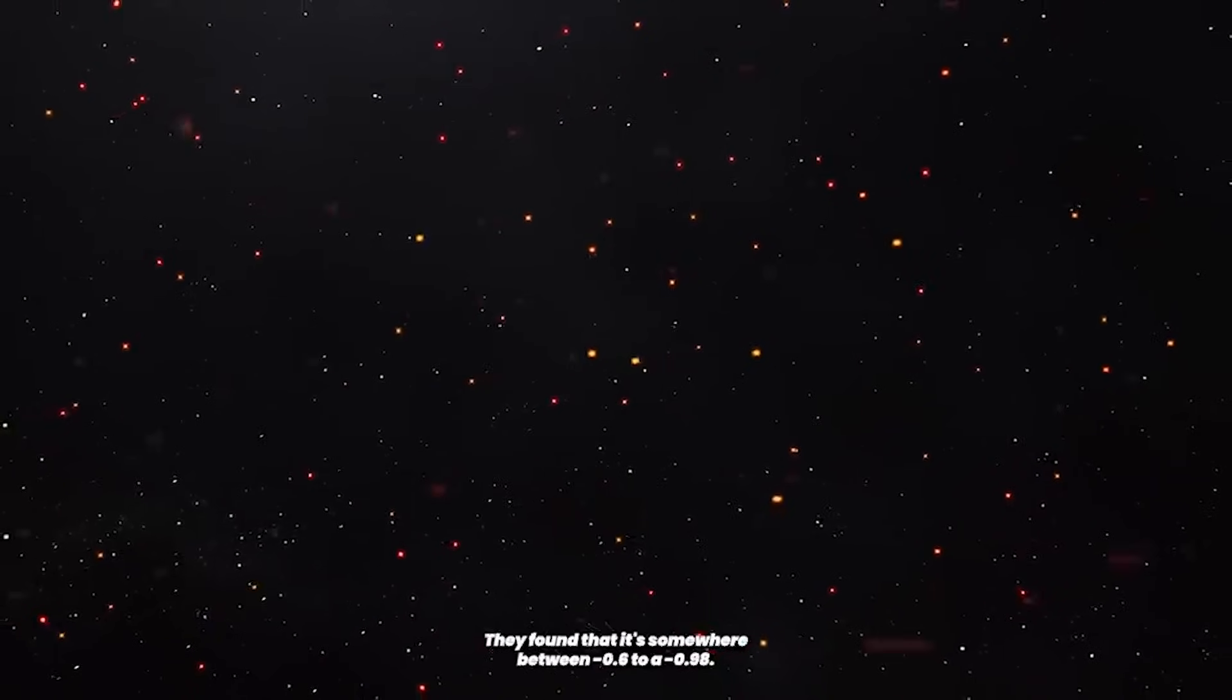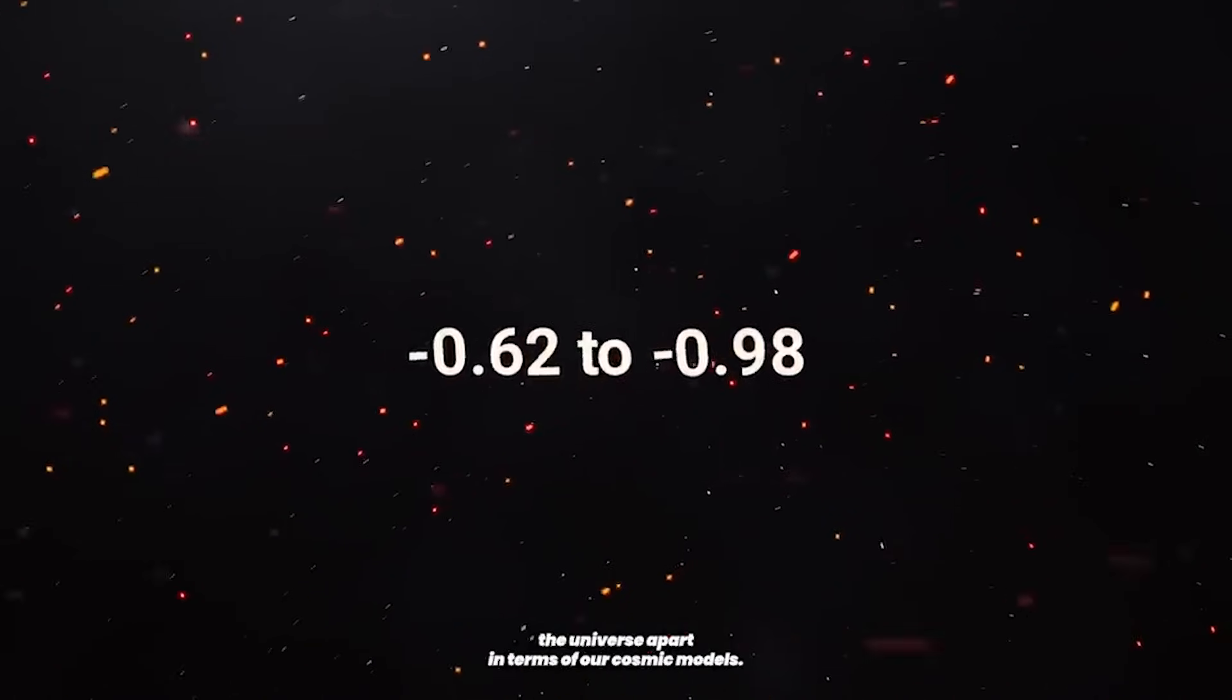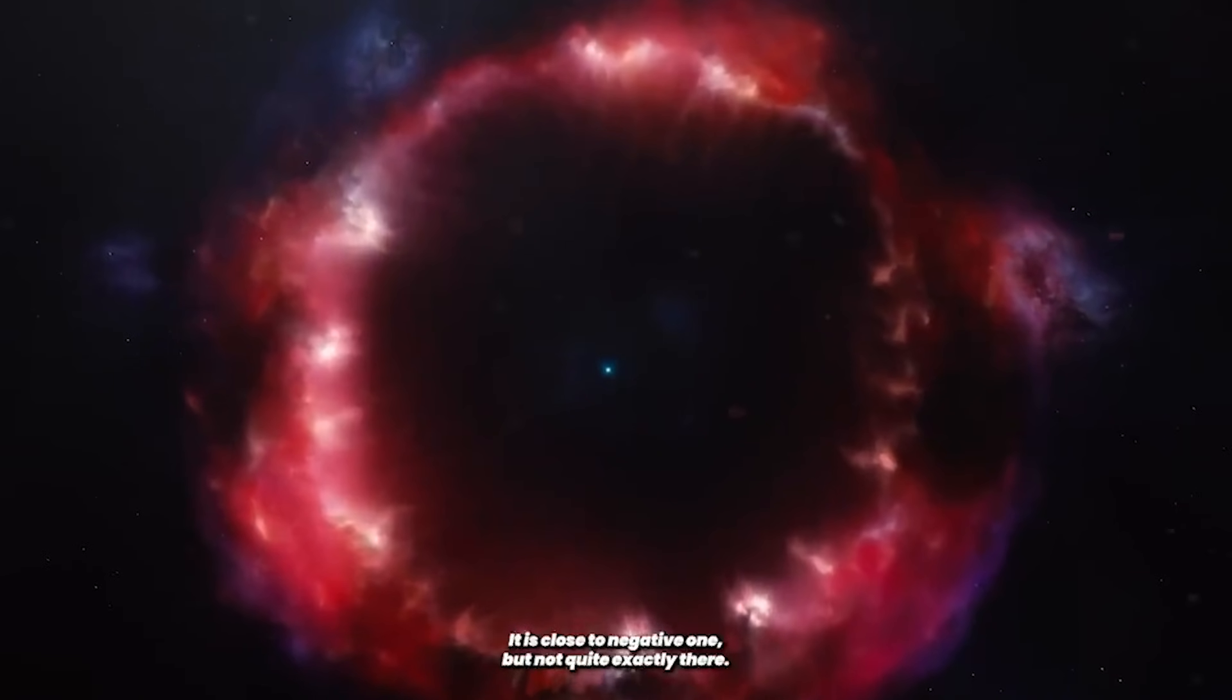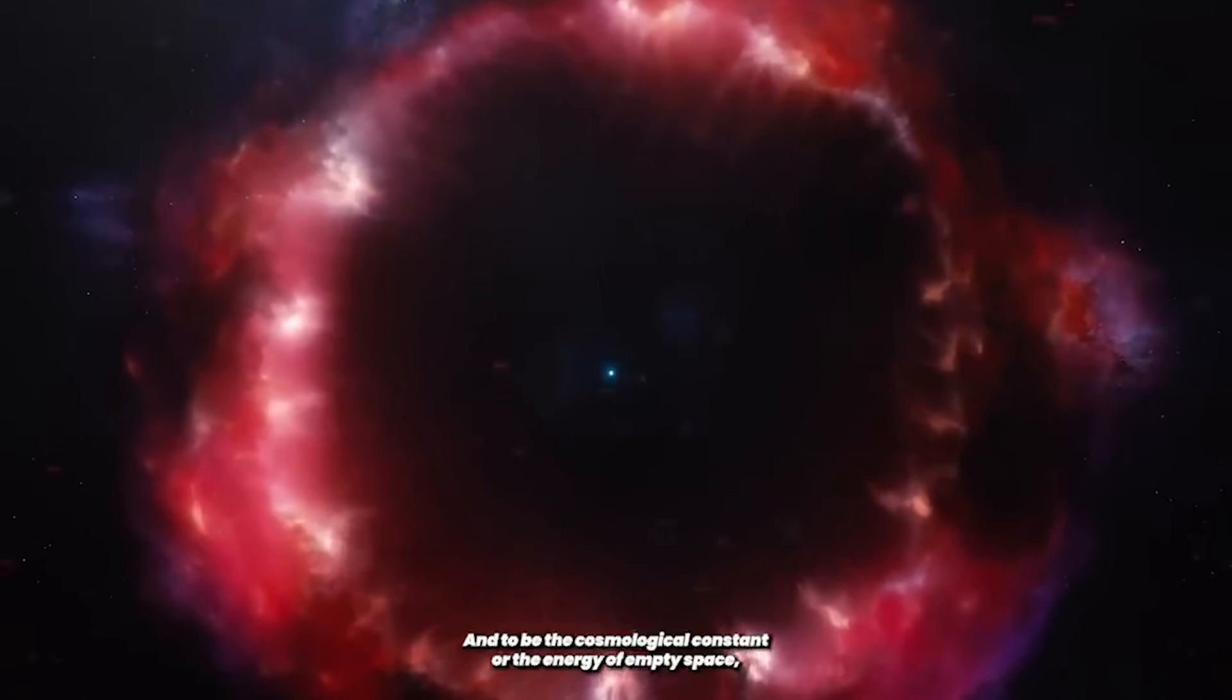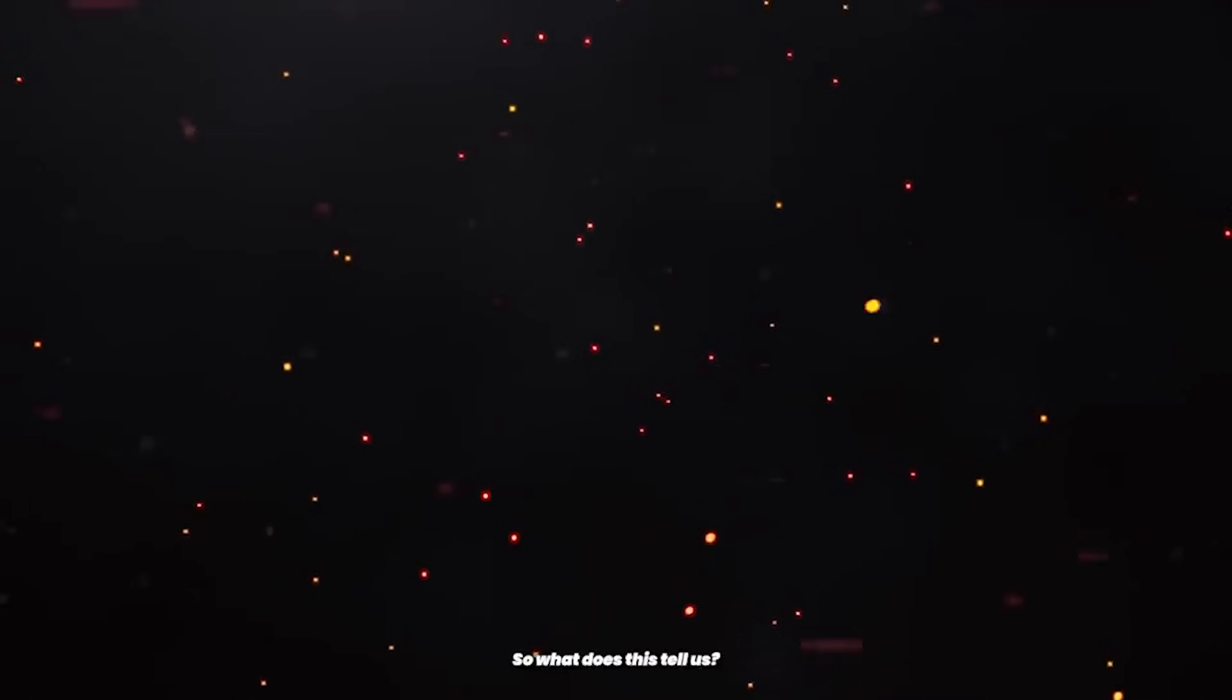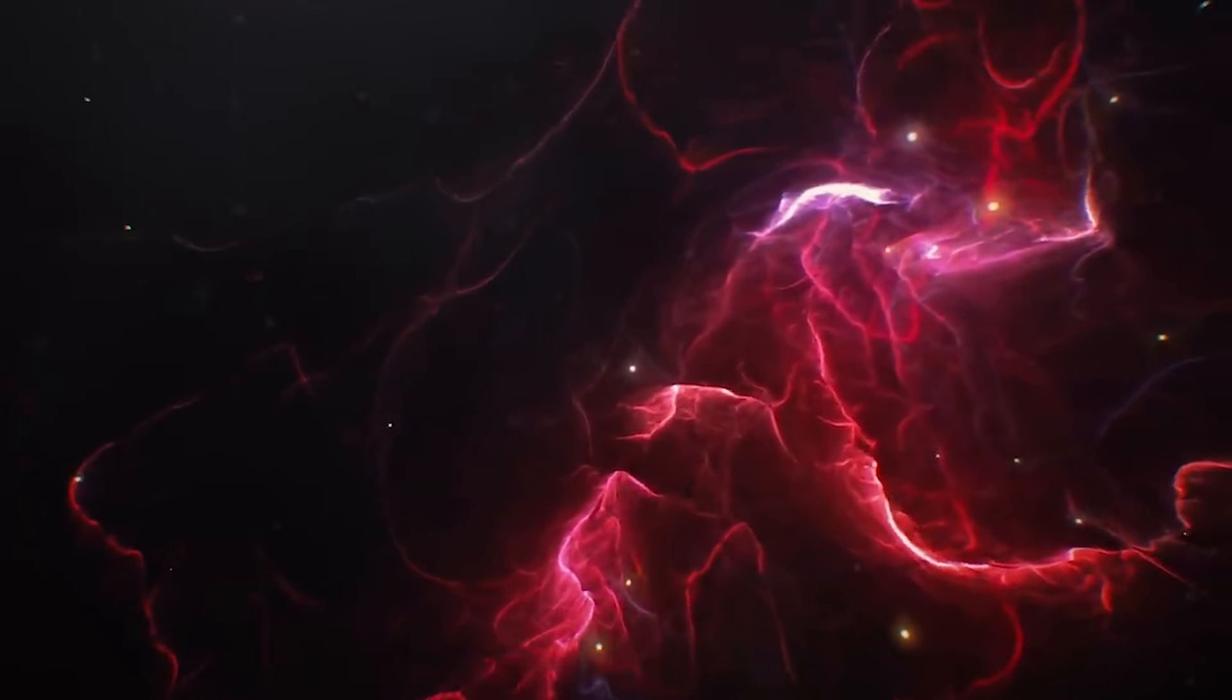They found that it's somewhere between negative 0.62 and negative 0.98. This is a very interesting result, and it could rip the universe apart in terms of our cosmic models. It is close to negative 1, but not quite exactly there. And to be the cosmological constant or the energy of empty space, it would need to be exactly minus 1. So what does this tell us? That we may need a different model of dark energy, something more complex, perhaps one in which it has changed over the life of the universe. Or maybe the whole thing needs to be looked at differently, very differently.